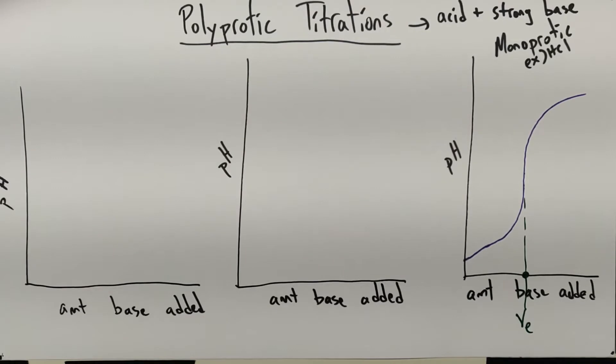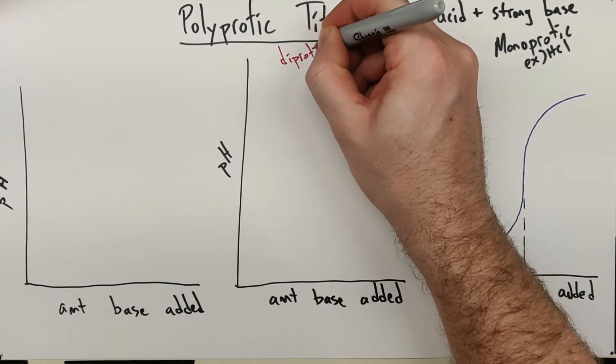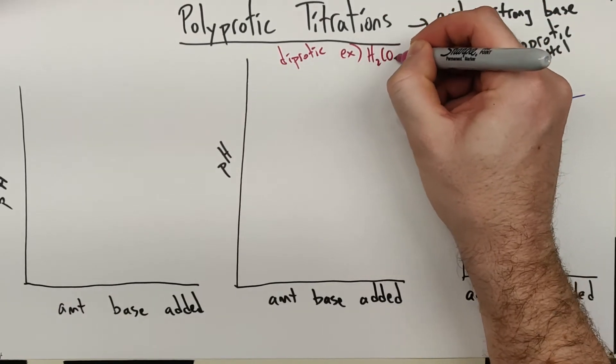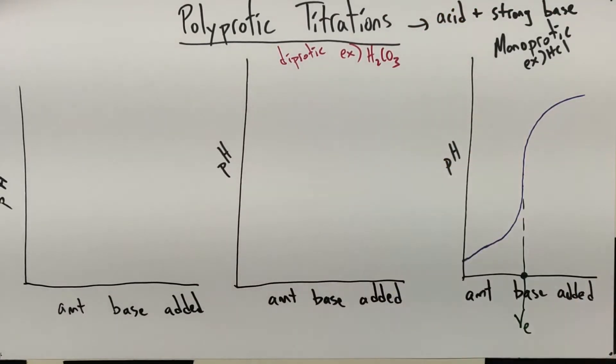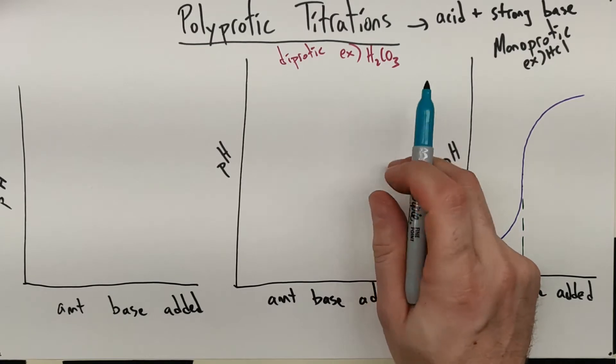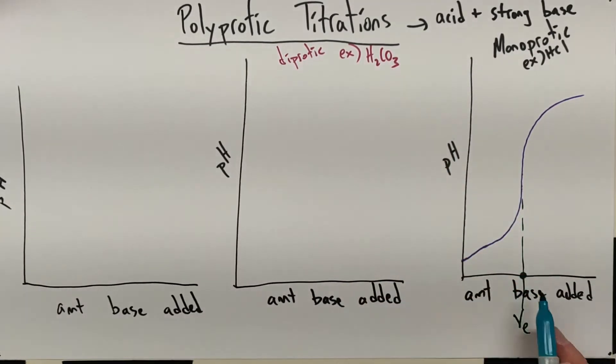Now what happens when we have polyprotic acids, things like H2CO3 or H3PO4? So we'll look at a diprotic example here. I'm going to be very careful how I set this up, because H2SO4 is special, and I don't want to put that one on this graph. So let's see what we can do for H2CO3. What is the difference we're going to see? Well, there's two H's to pull off. And a lot of times they'll say stepwise ionization, removing these H's. And actually, that is what we see.